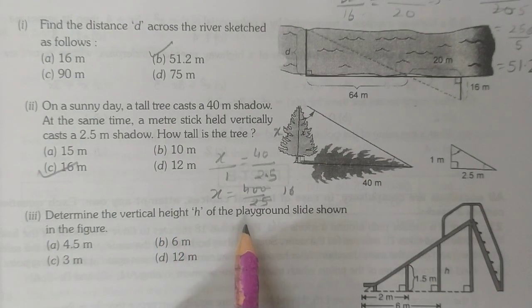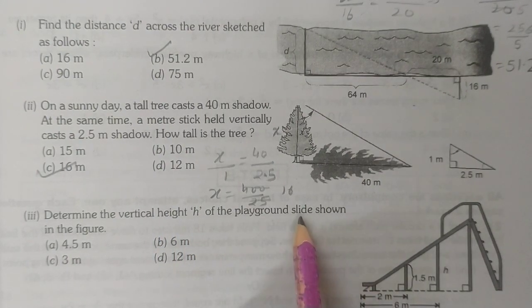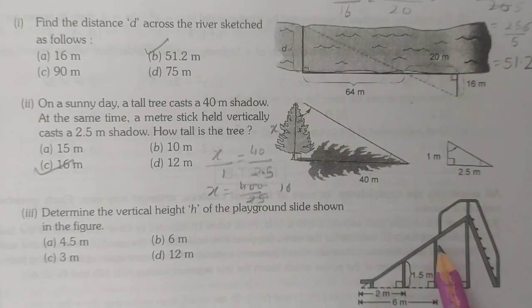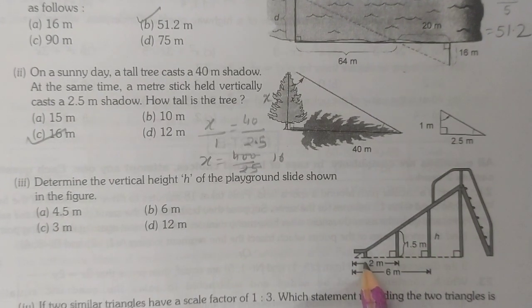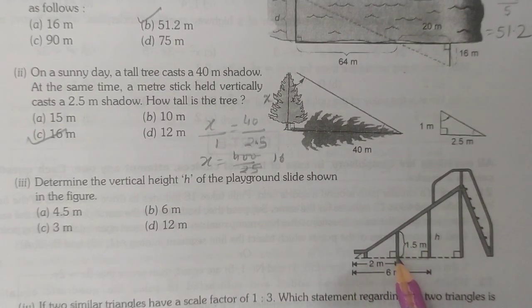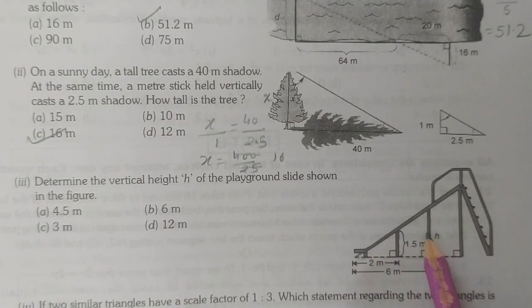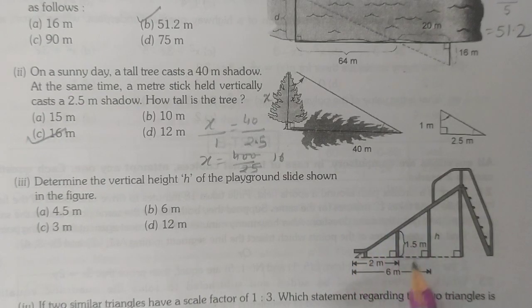Third question: Determine the vertical height h of the playground slide shown in the figure. We have this height, 2 meters, 6 meters, and 1.5. If you see, this triangle and this big triangle both are similar by AA.